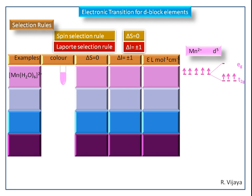Because of this weak field ligand, it will have a high spin complex. During the transition, the electron is excited from the T2G orbital to the EG orbital — we get a D-D transition. In this transition, the spin direction is changed, so it is a spin forbidden transition. Due to this D-D transition, we also get a Laporte forbidden transition.